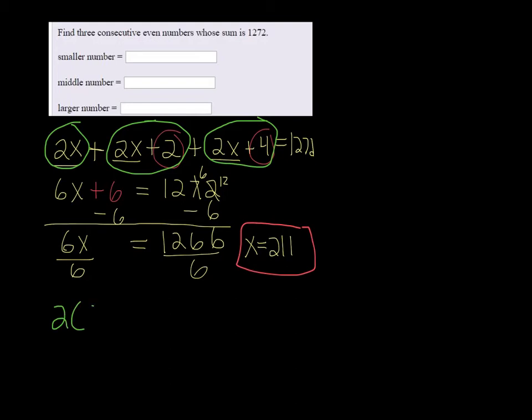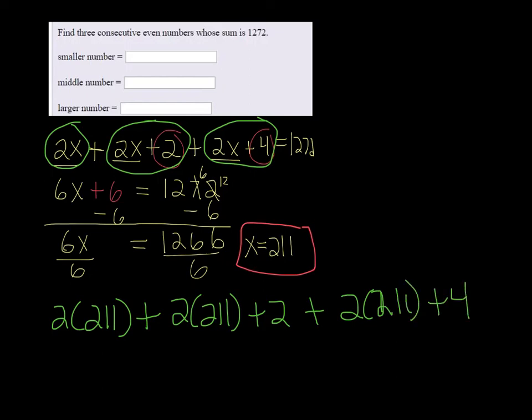So it would be 2 times 211, plus 2 times 211 plus 2, plus 2 times 211 plus 4. 2 times 211 is 422 and of course the next integer would be 424 and then 426.